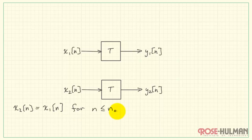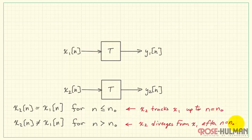Let's further assume that X2 is equal to X1 up to some time n naught. After that point, X2 is not equal to X1. Think of it this way: X2 tracks X1 identically up to the time n equals n naught, and then it diverges thereafter.